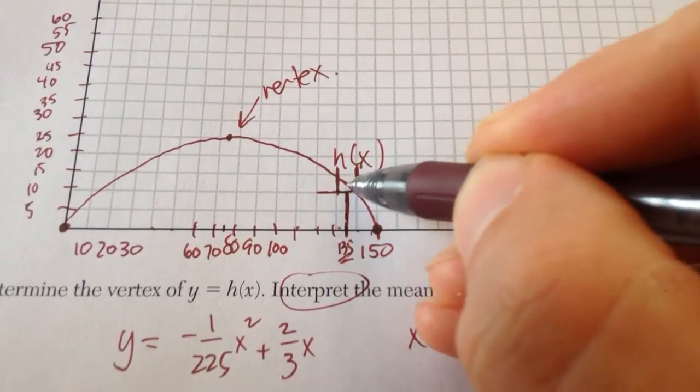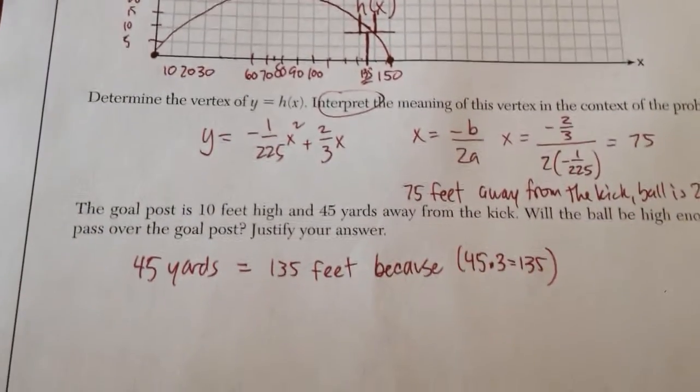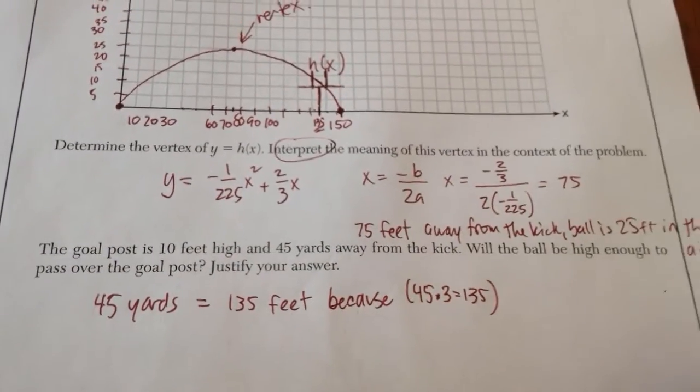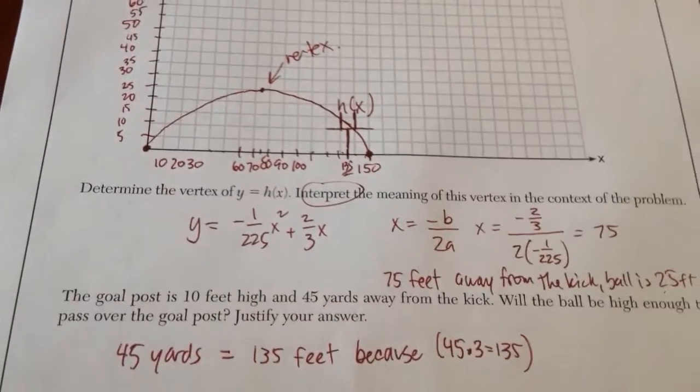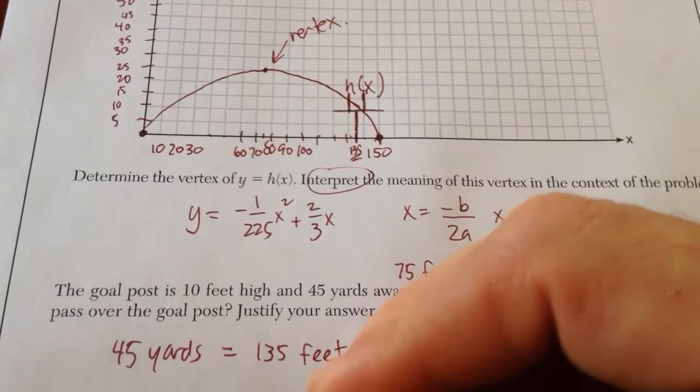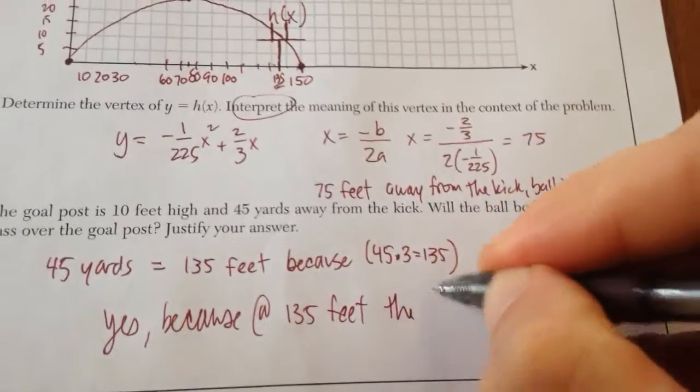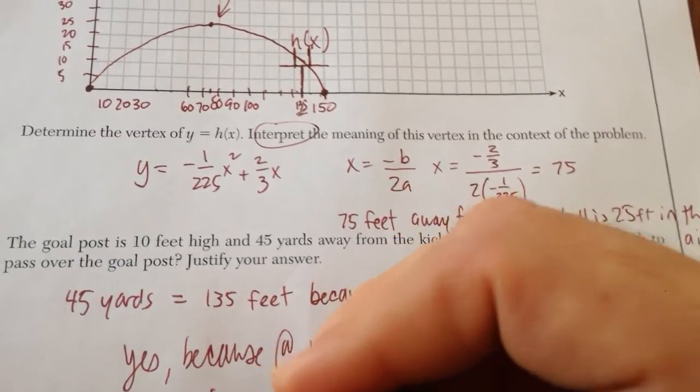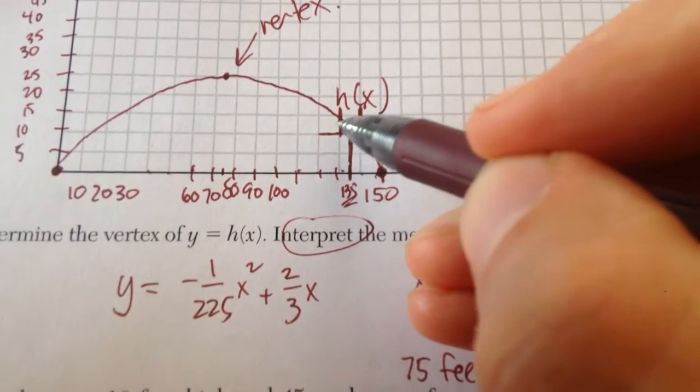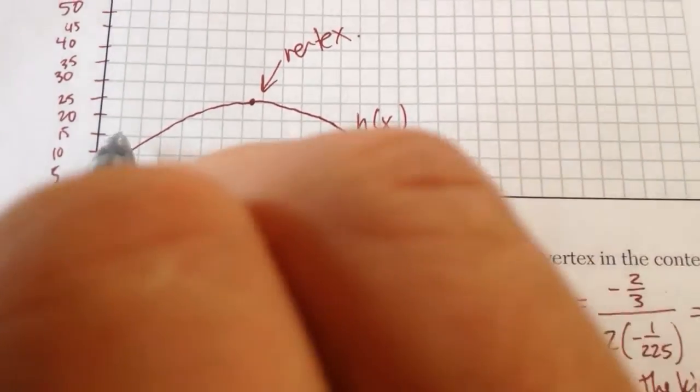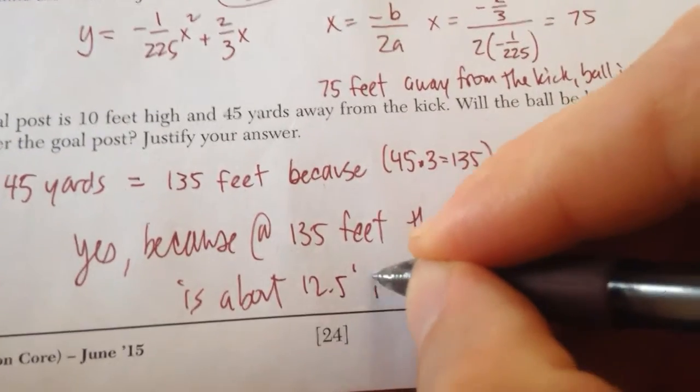This is the path of the ball. Is this ball above the goal post? It sure looks like it is. Will the ball be high enough? Yes. Because at 135 feet, the ball is about, how high in the air would you say? About 15, maybe 12 and a half. The ball is 12 and a half feet in the air.